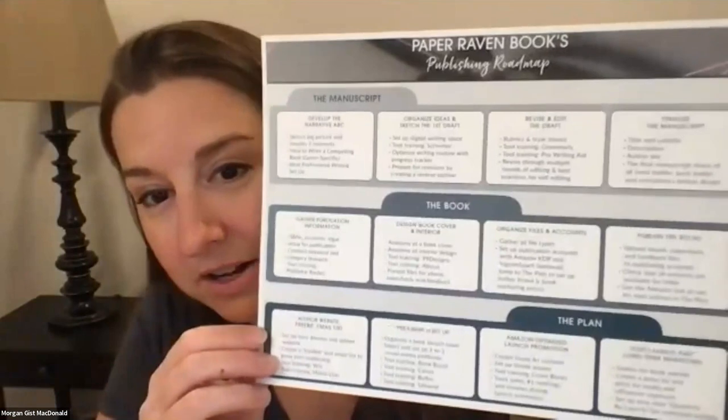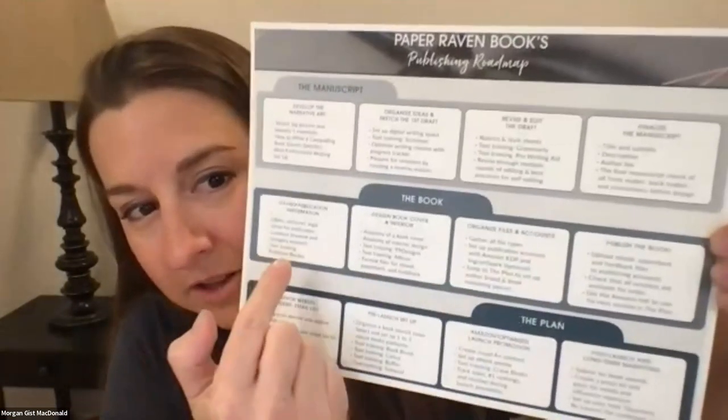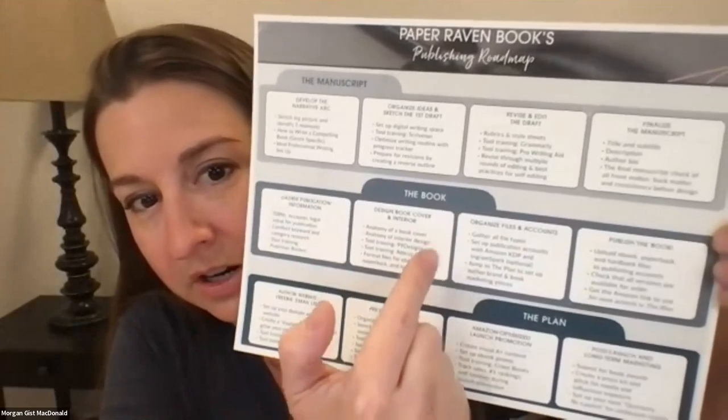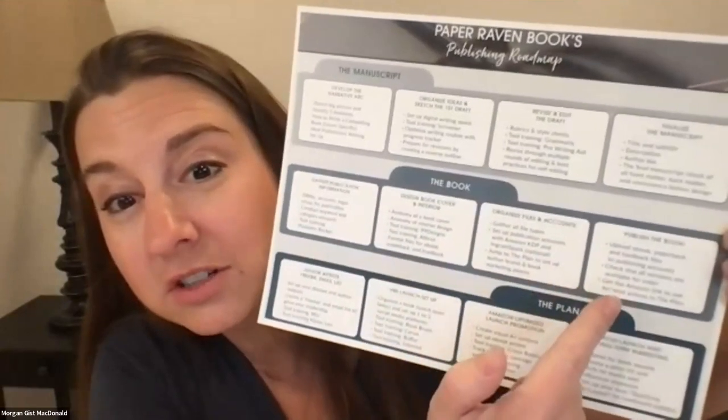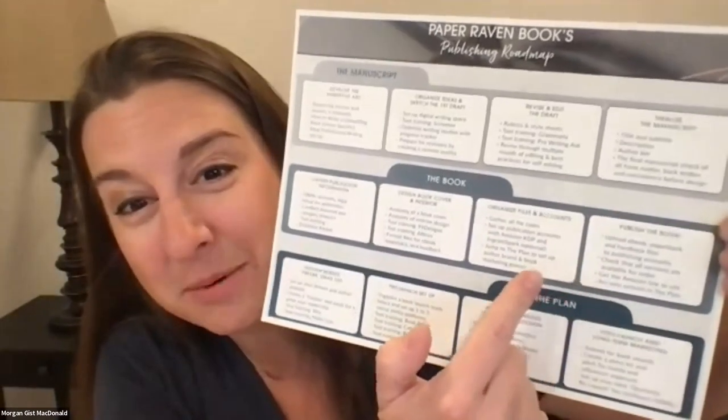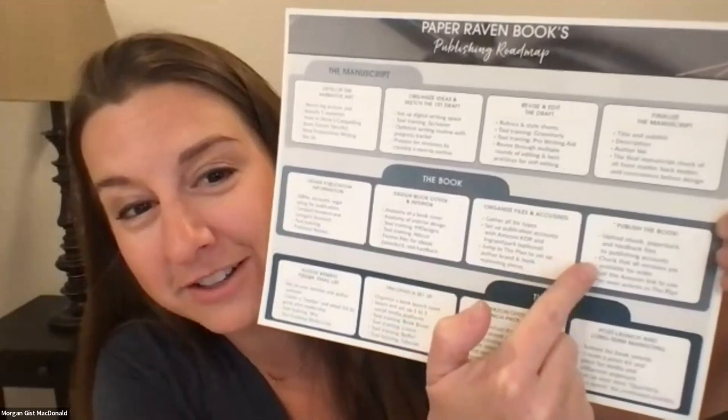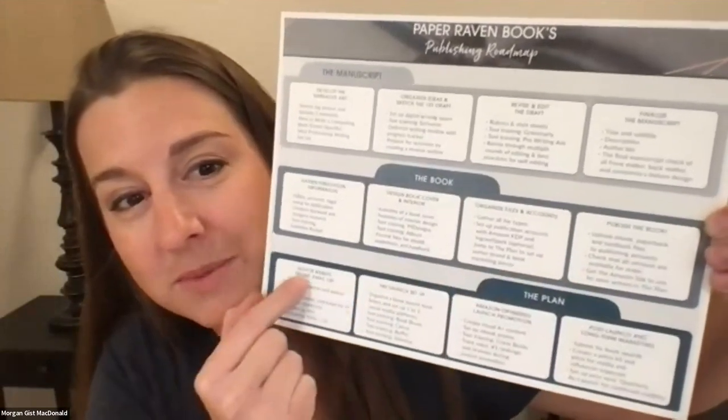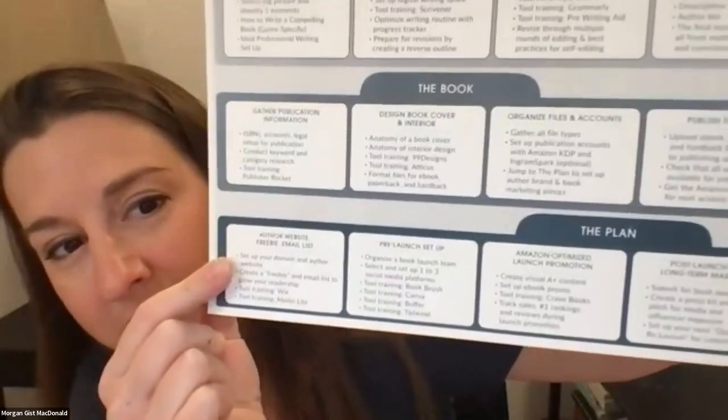Today, before we publish, it's very important to set up your author website, freebie, and email list. You almost want to imagine a little arrow pointing back to the beginning — author website, freebie, email list — we need these actually set up before we publish, and I'll share with you why. Resources are at paperravenbooks.com/nano-resources.